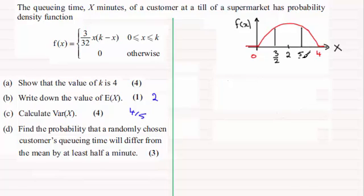And that probability is represented by the area to the left of 3 over 2 or to the right of 5 over 2, and both these areas are exactly the same because of the symmetry of this curve.